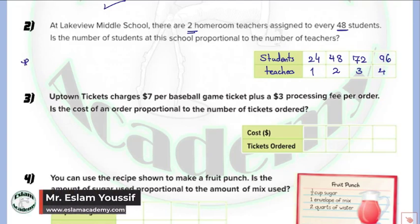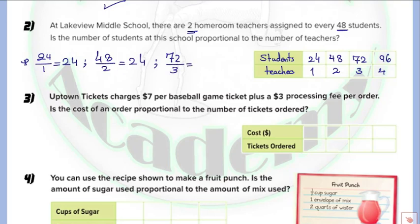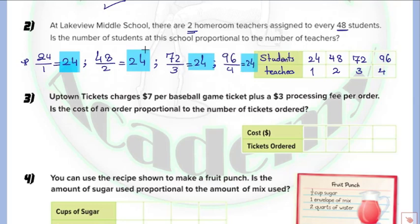We find the rate for each pair. 24 divided by 1 equals 24. Then 48 divided by 2 equals 24. The third rate: 72 divided by 3 equals 24. And the last one: 96 divided by 4 equals 24. All of the rates are equal, which means this relation is proportional.